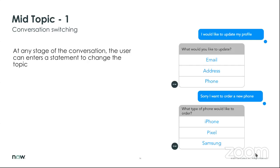An important element of the virtual agent is the ability to switch conversations. At any stage of the conversation, the user can enter a statement to switch topics. For example, I typed 'I would like to update my profile,' and the virtual agent engages for that topic. But if I realize I actually want to order a new phone, I could switch conversations by just typing 'I want to order a new phone' and have the virtual agent switch there.